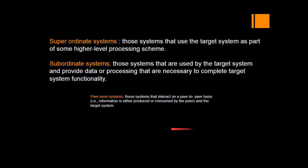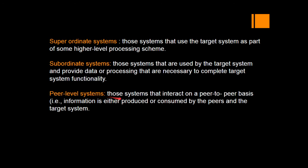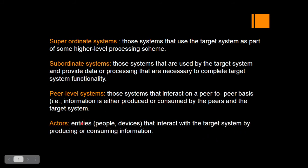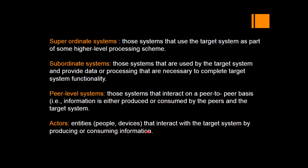Peer-level systems are those systems that interact on a peer-to-peer basis — that means they are at the same level. Data is produced or consumed by their peers and the target system. Actors are all the entities, people, or devices that interact with the target system by producing or consuming information.